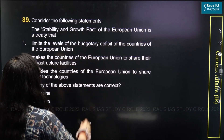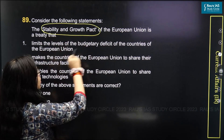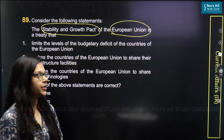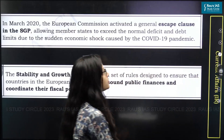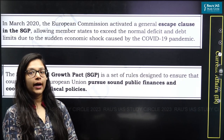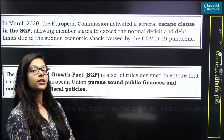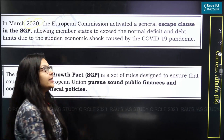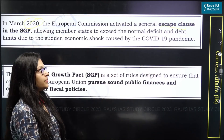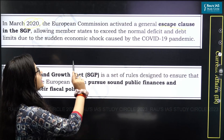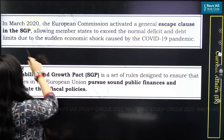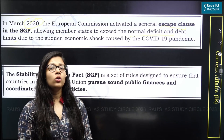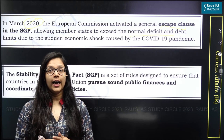This question talks about the Stability and Growth Pact of the European Union. First of all, we would look into the context of the question. The Stability and Growth Pact of the EU was in news especially during the COVID-19 pandemic, when the European Commission activated an escape clause of this pact in order to ensure that the states can exceed their normal deficit and debt limits to cope with the exigencies of the COVID-19 pandemic.